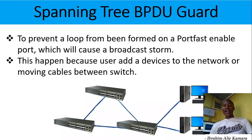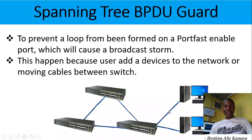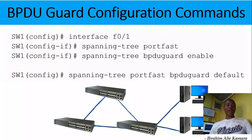This problem happens because users add devices to the network or move cables. For example, a user may come in and disconnect the cable from a PC connected to f0/1 and instead connect a switch — perhaps to add more devices to the network. Since that interface already has portfast enabled, connecting another switch will cause a loop within the network. That is why we need to configure BPDU guard.